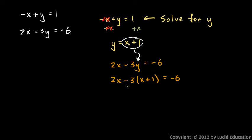And this, an equation with one variable, can be solved with ordinary algebra. So let's distribute this 3 here. Don't forget that it's a negative 3. So this is 2x minus 3x minus 3 equals negative 6. So let's see, 2x minus 3x is negative x.